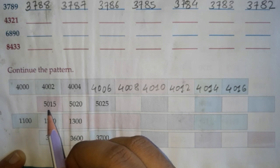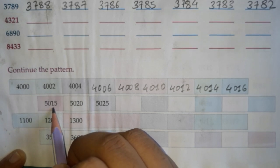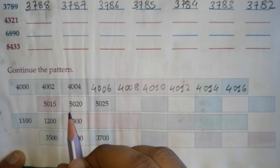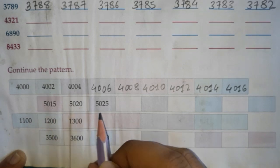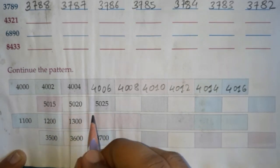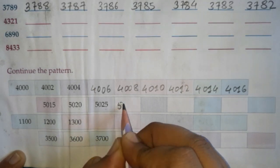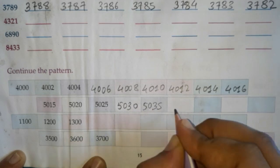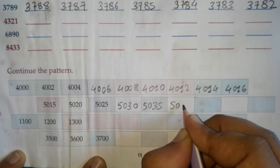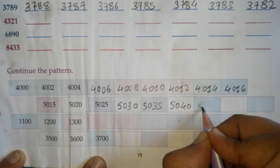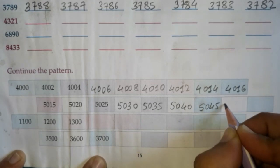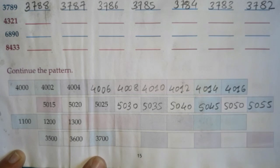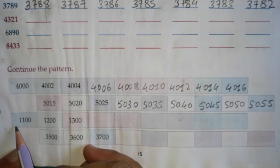Next series starting at 5015 — in this question they are adding plus 5 to each number. 5015, 5020, 5025. Following the pattern: 5030, 5035, 5040, 5045, 5050, and 5055.